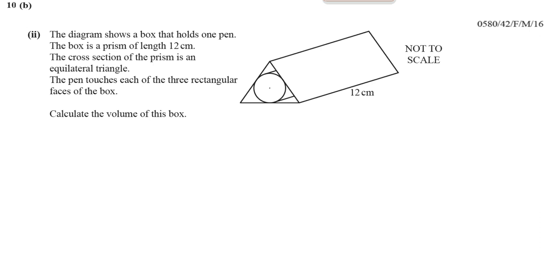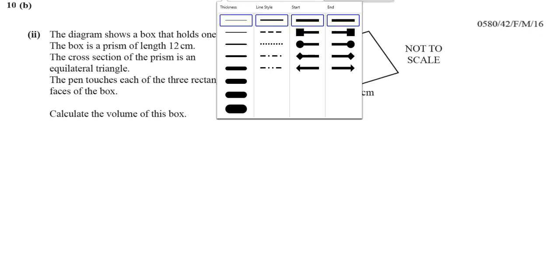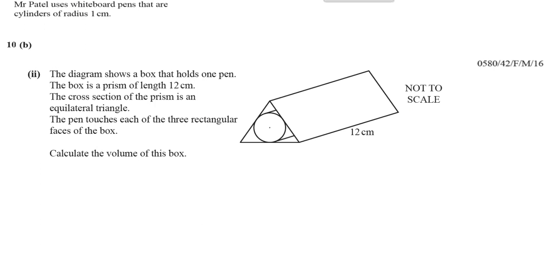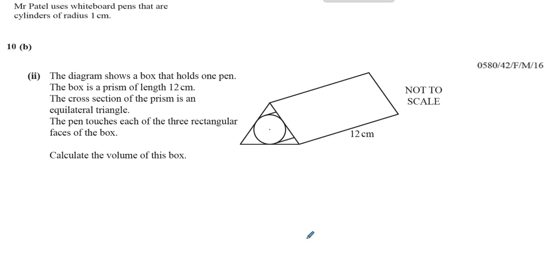In this question we are asked to find the volume of this box. There is a bit of context from the earlier part of the question. Basically, they told us an important piece of information that these cylinders are cylinders of radius 1 cm. So the radius of this cylinder is 1 cm.